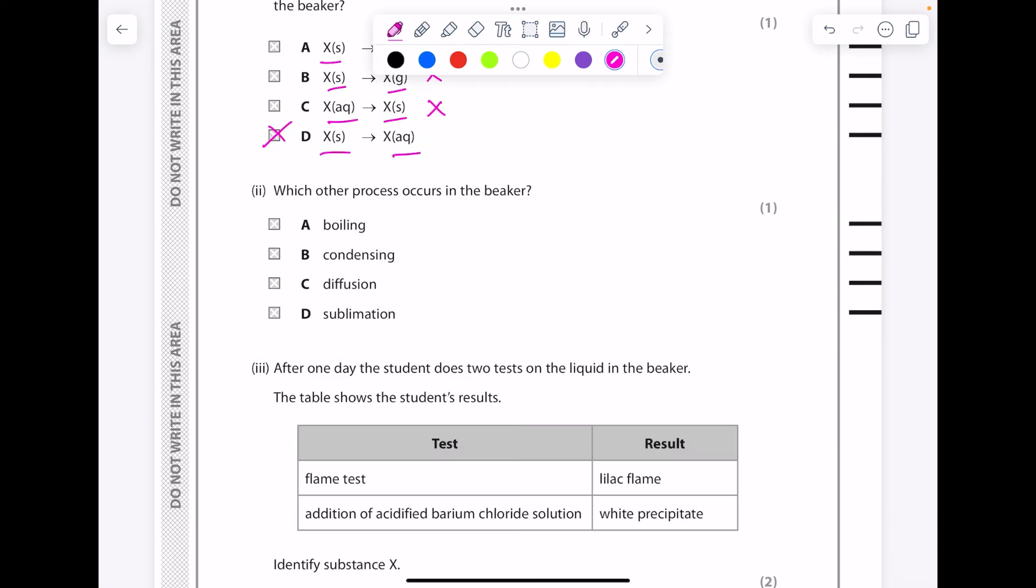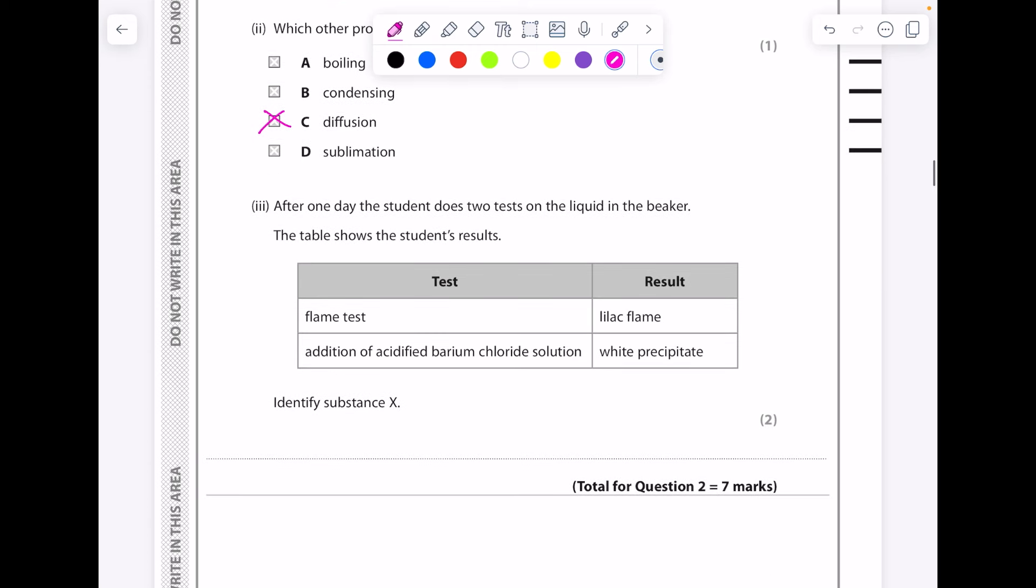Which other process occurs in the beaker? Well, it's going to be diffusion because it's not boiling—that's going from a liquid to a gas. It's not condensing, that's gas to liquid. And sublimation, remember, is solid to gas.